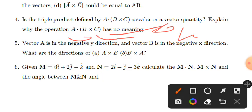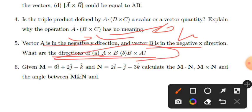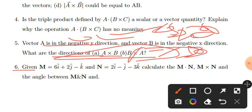Vector A is in the negative y direction and vector B is in negative x direction. What is the direction of A×B? Using the cross product sign rule, negative y times negative x gives positive z direction.